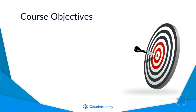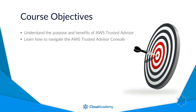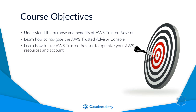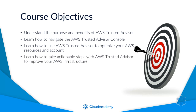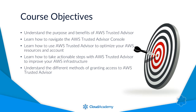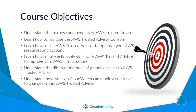There are a number of learning objectives to this course. You'll understand the purpose and benefits of Trusted Advisor. You will learn how to navigate the Trusted Advisor console. You will gain an understanding of how to use Trusted Advisor to optimise your AWS resources and account. You'll understand how to take actionable steps with Trusted Advisor to improve your AWS infrastructure. You will also see how to configure different methods of granting access to Trusted Advisor, and finally you will understand how Amazon CloudWatch can monitor and react to changes within AWS Trusted Advisor.